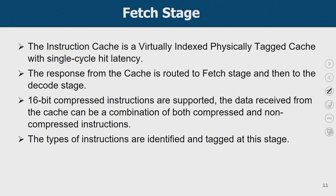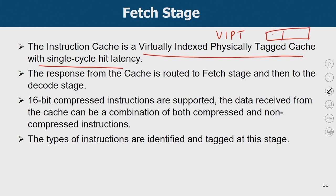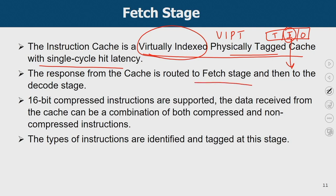Looking at the fetch stage: the instruction cache is virtually indexed and physically tagged (VIPT) with a single-cycle hit latency. With indexing, you go into the cache using virtual address bits before translation; simultaneously, TLB translation happens so physical tag bits become available. We call it a virtually indexed, physically tagged cache. The response from the cache is sent to the fetch stage and then to the decode stage. Since this processor class supports both 16-bit compressed and 32-bit uncompressed instructions, the data received from the cache may be a mix of both, and appropriate decompression or direct processing is done before decoding.